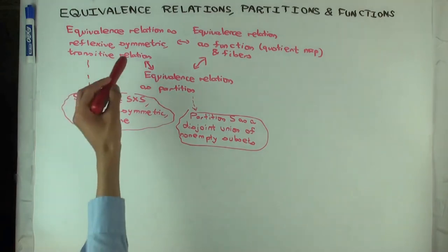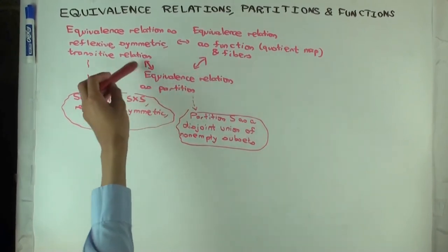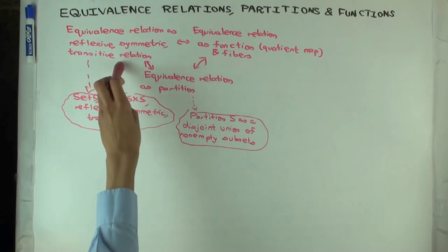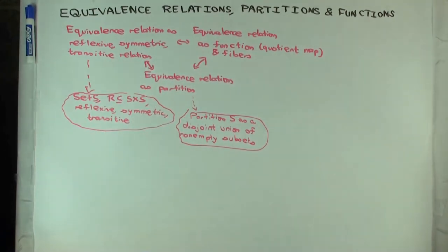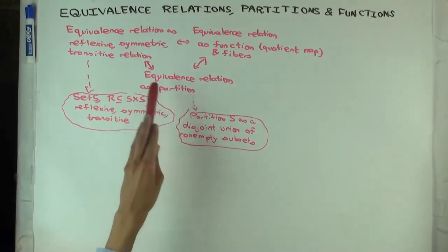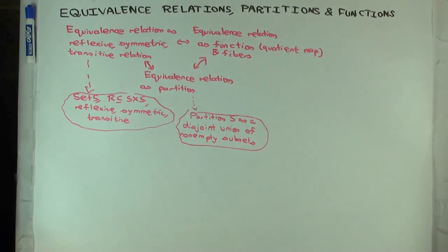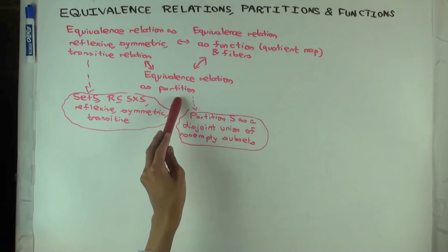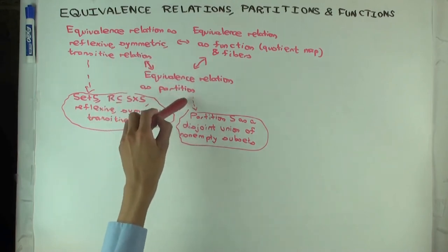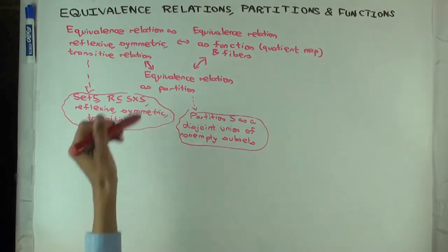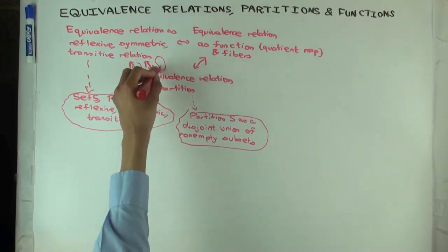What do I mean by saying these are equivalent? What I mean is that if I give you any reflexive, symmetric, transitive relation on a set, I can use that to get a partition in a unique way. And if I start with any partition, I can use that to get a reflexive, symmetric, transitive relation in a unique way. And if I go like this and then back, or go like this and then back, both two-way composites are identities. That is, if I start with a relation, take the corresponding partition, and look at the relation induced by that partition, I should get back the original equivalence relation. On the other hand, if I start with a partition, consider the relation induced by the partition, and then consider the partition that arises from that relation, I should get back the original partition.